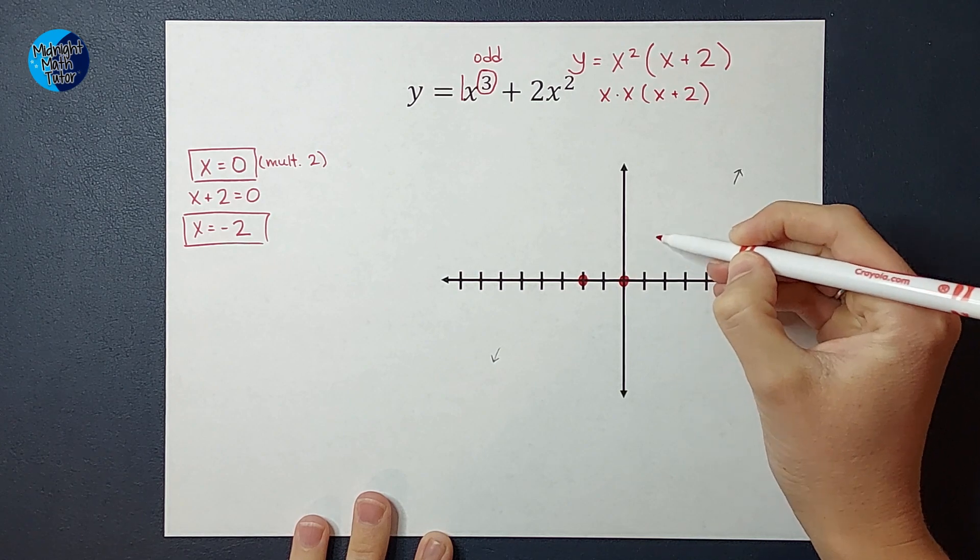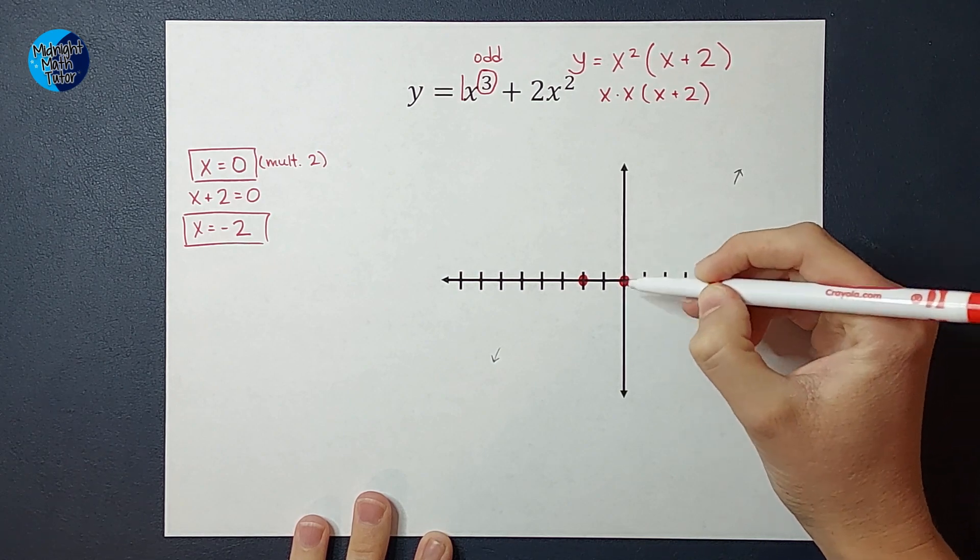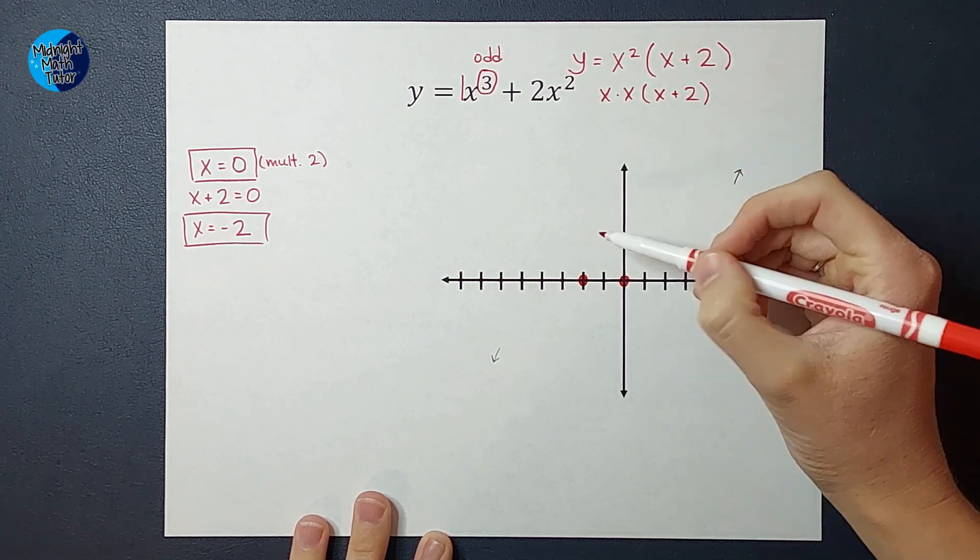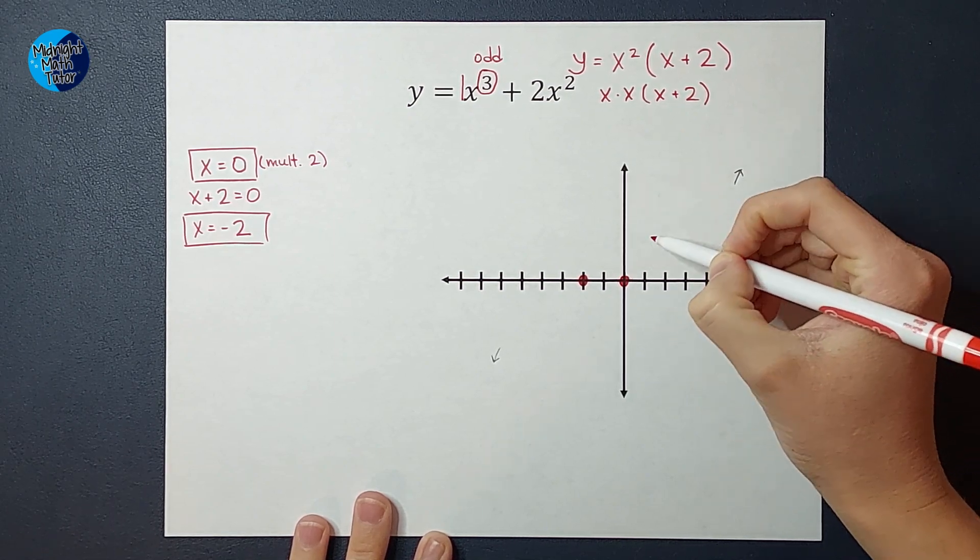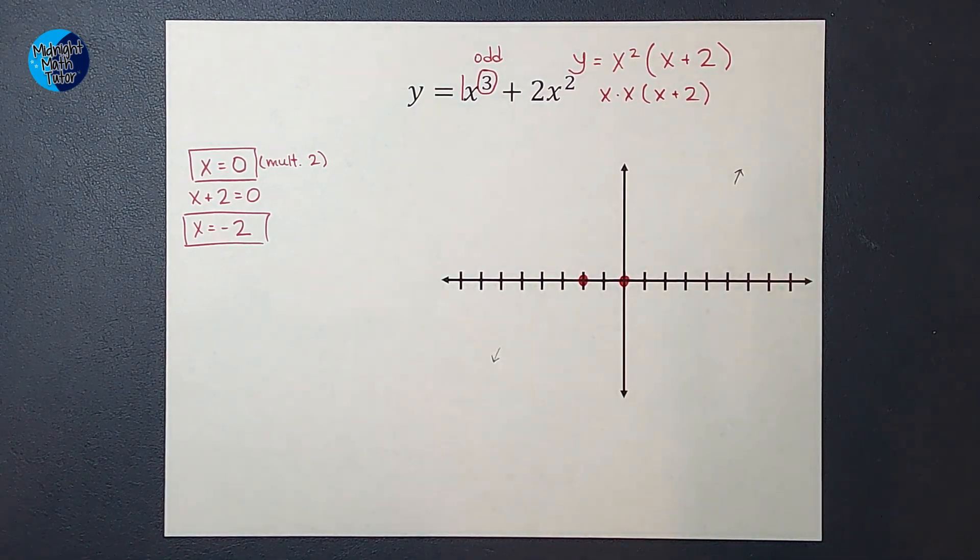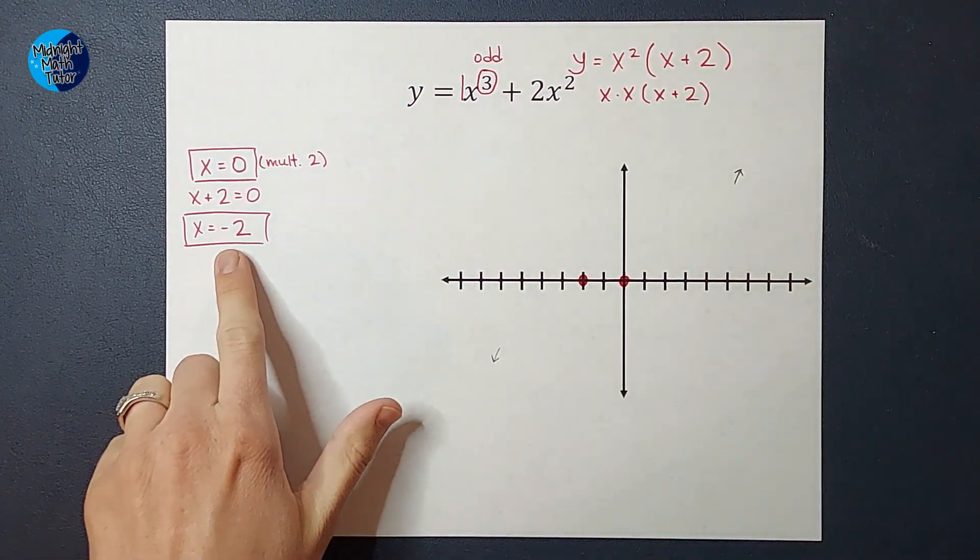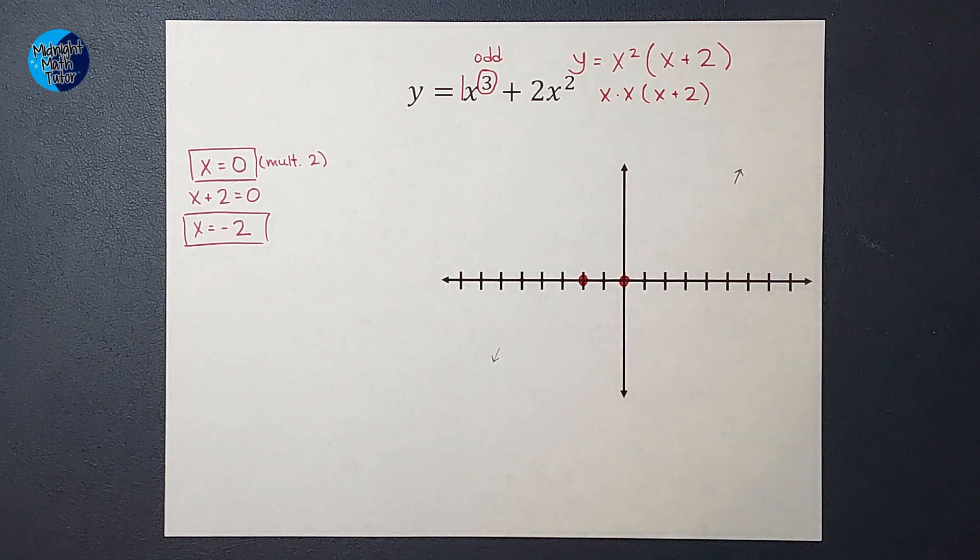Either up or down. We figured out that this side is going up, so I know it's going to go up. It's going to bounce there. It's not going to go through it, it's going to bounce there, kind of like a parabola.